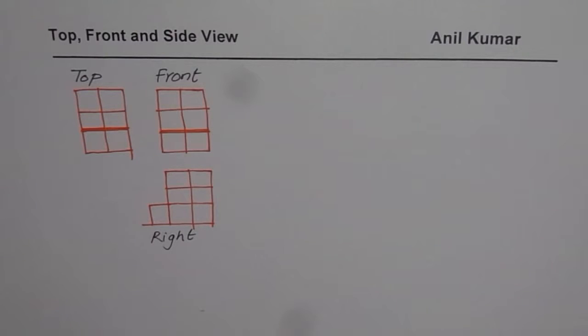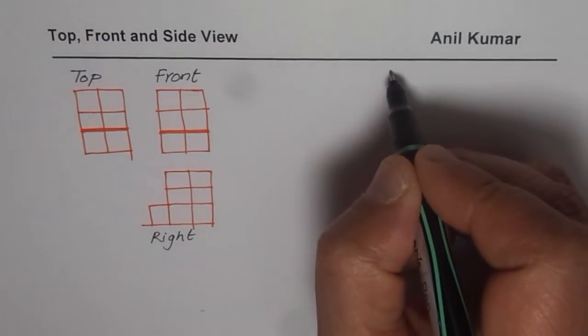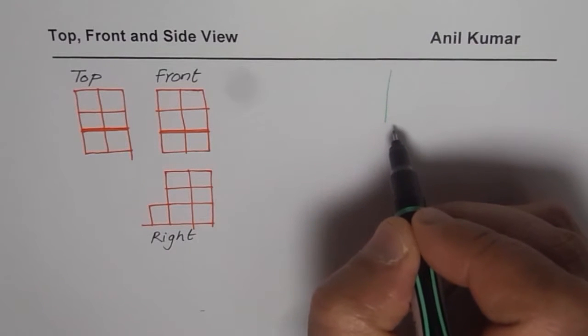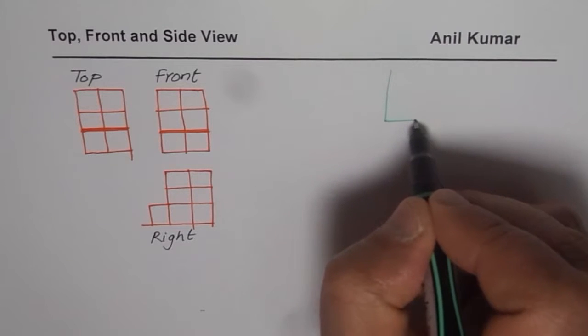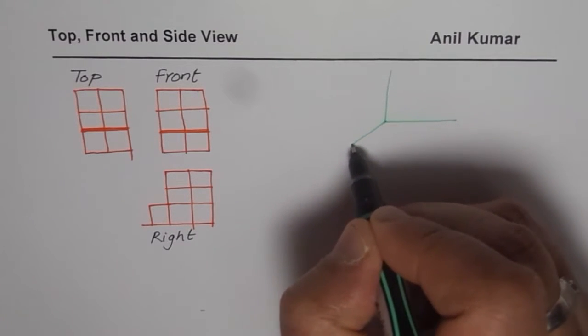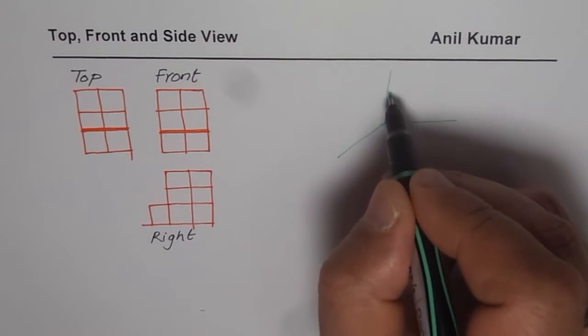Now the strategy here is, whenever you are drawing a three-dimensional figure, always consider the plane as the corner of your wall. You should draw vertical lines, horizontal lines, and that gives you three-dimensional effect. This becomes your horizontal plane and that is your height.